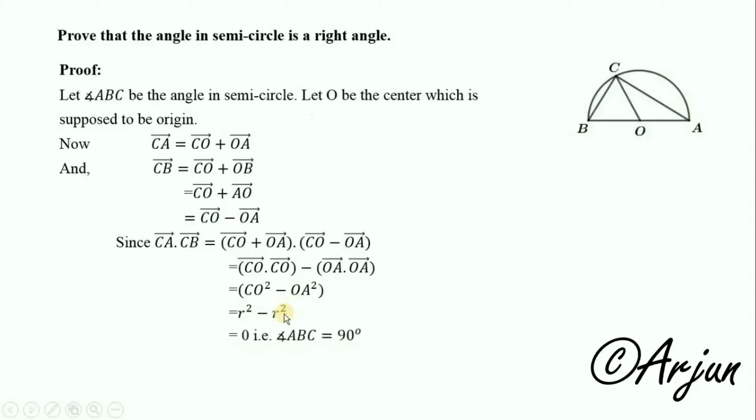This equals zero. That implies the dot product is zero, which means the angle ABC is 90 degrees. This proves the theorem.